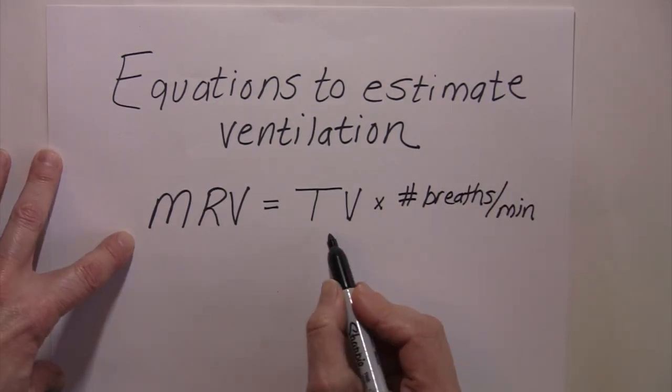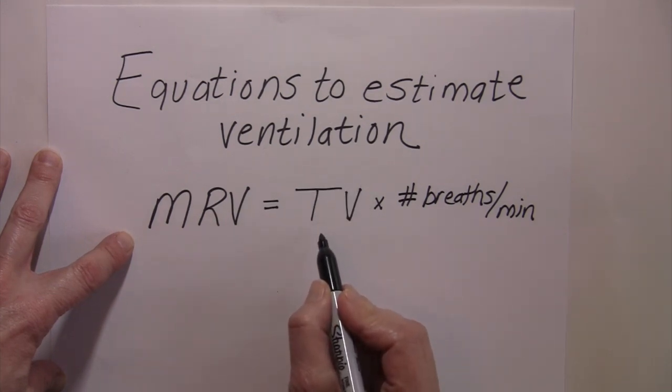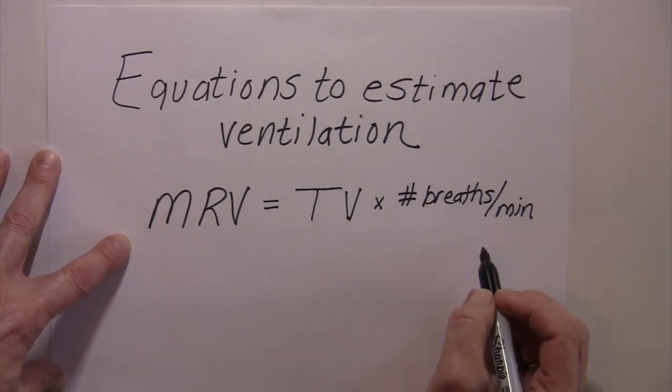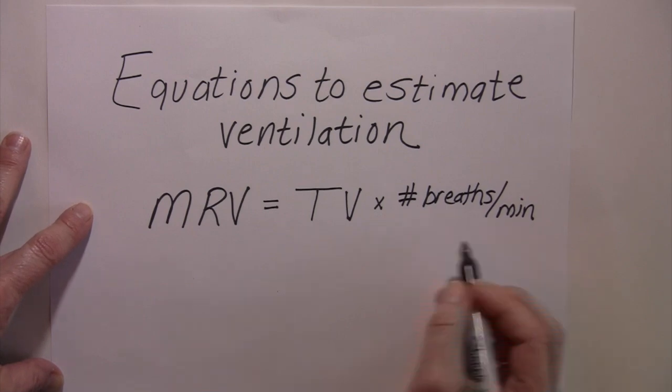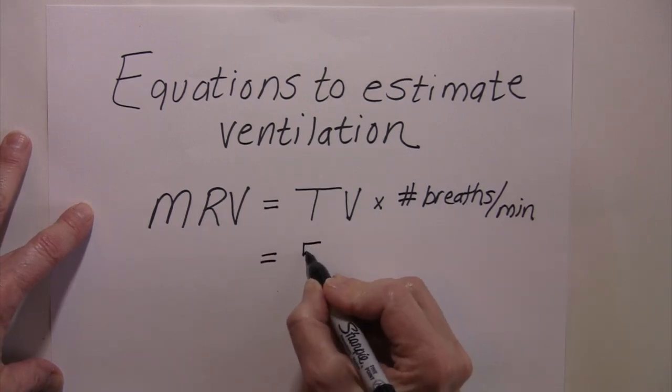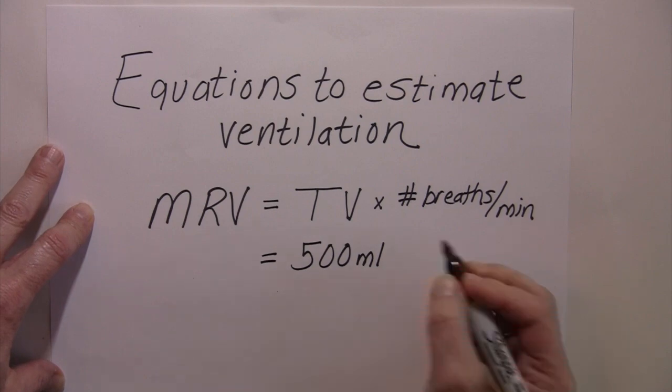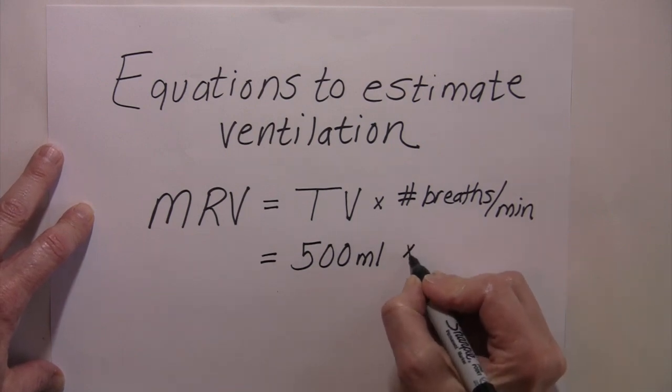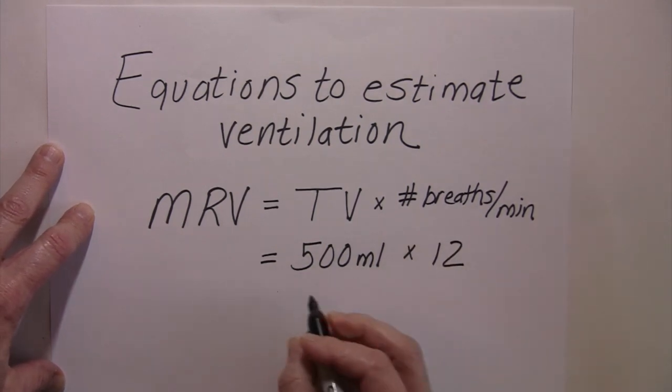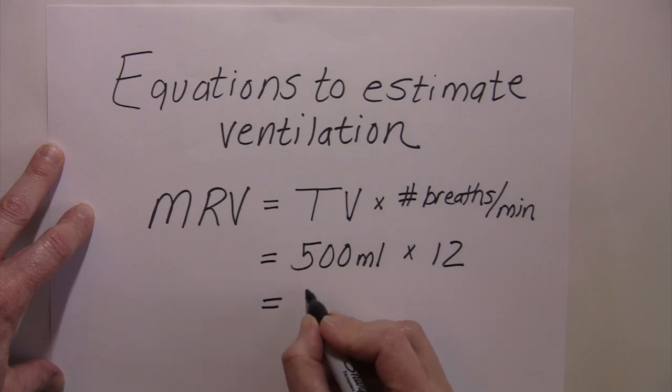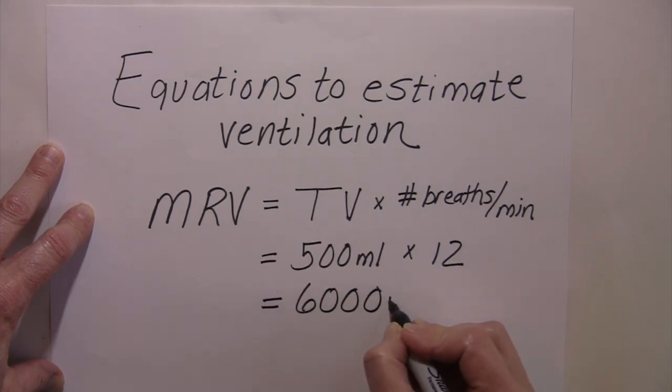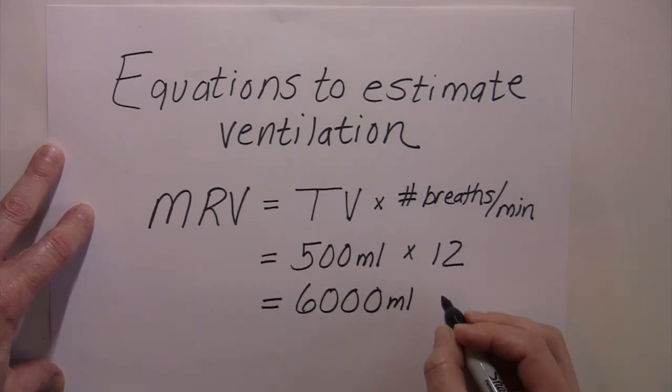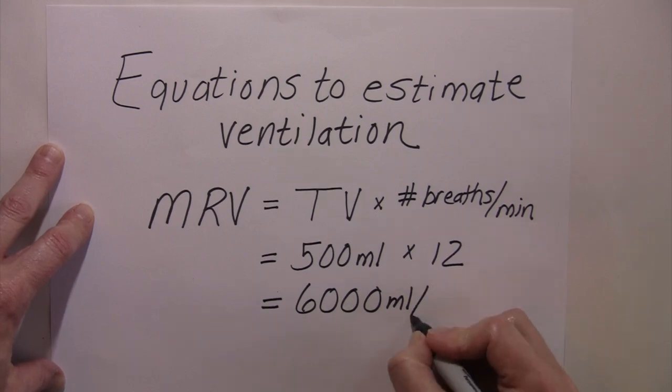So the minute respiratory volume is just the amount that we're inhaling times the number of breaths that we're bringing that in in one minute. So on average, people bring in about 500 mils on an inhalation. And on average, maybe they're taking about 12 breaths per minute. And so the minute respiratory volume would be about 6,000 milliliters, or in other words, 6 liters of air per minute.